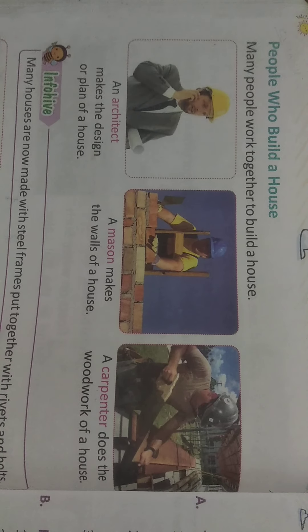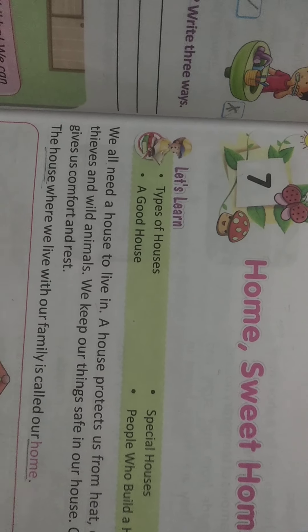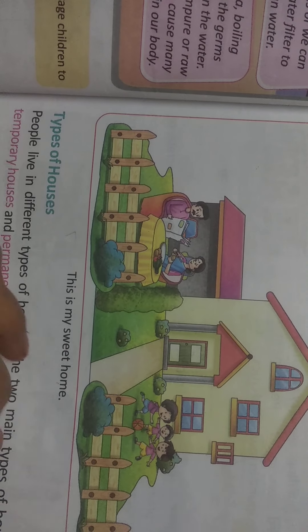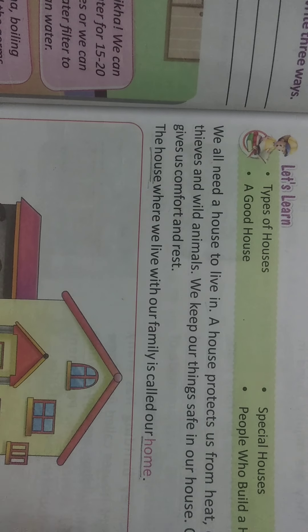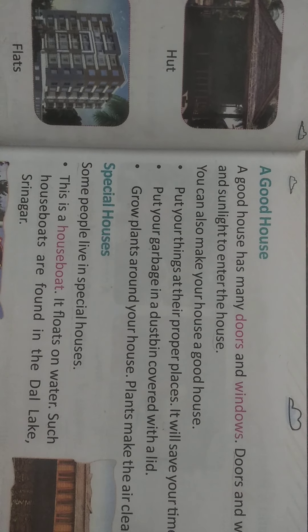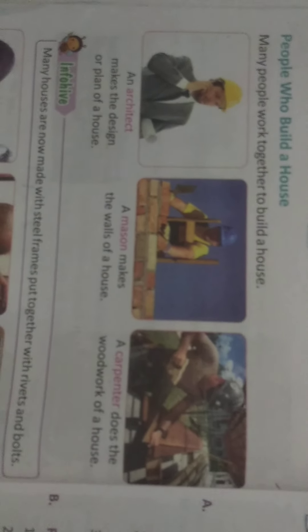Good morning, dear children. Let us complete Lesson 7 - Home Sweet Home. In this lesson we have discussed different types of houses, the difference between a house and a home, different types of roofs - flat roofs and sloping roofs, features of a good house, and special houses. In yesterday's series class I explained all about special houses. Today we will read and understand the topic: people who build a house.